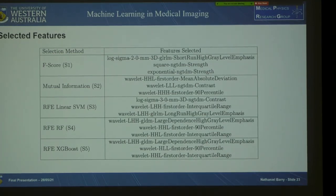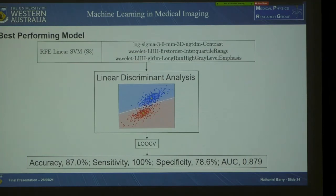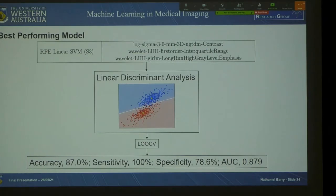Our best performing model came from features selected via recursive feature elimination using a linear support vector machine, consisting of one log textural feature, one wavelet first-order feature, and one wavelet textural feature — which are reassuringly distinct from each other. When put into our best performing classifier, linear discriminant analysis, with leave-one-out cross-validation, we achieved an accuracy of 87%, a sensitivity of 100%, a specificity of 78.6%, and an AUC of 0.879. That's really good performance considering an AUC of 1 is a perfect classifier — but I'm going to tell you why it's not actually as good as it sounds.